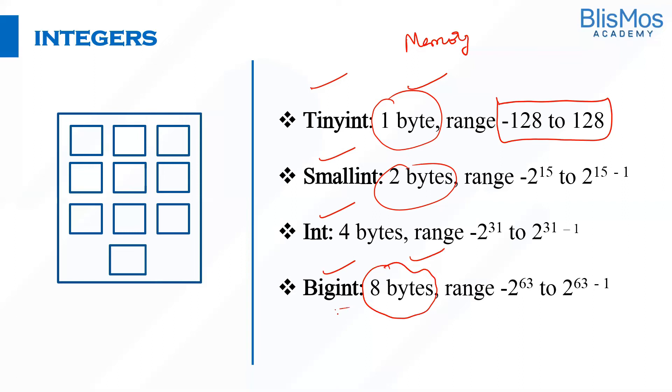If you have a requirement where your range is only between -128 to 128, then it doesn't make sense to define a bigint. At the same time, when you need a bigint with a range of -2^63 to 2^63-1, if you define a tinyint it will throw an error. You won't be able to store a big number as part of tinyint. So depending upon your requirement, we need to specify whether your integer data type is tinyint, smallint, int, or bigint.